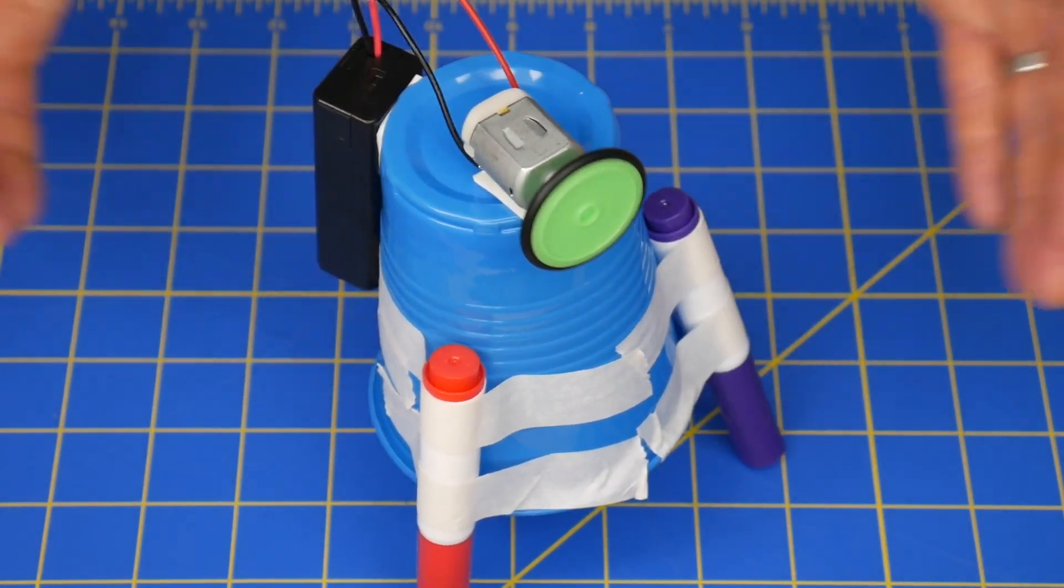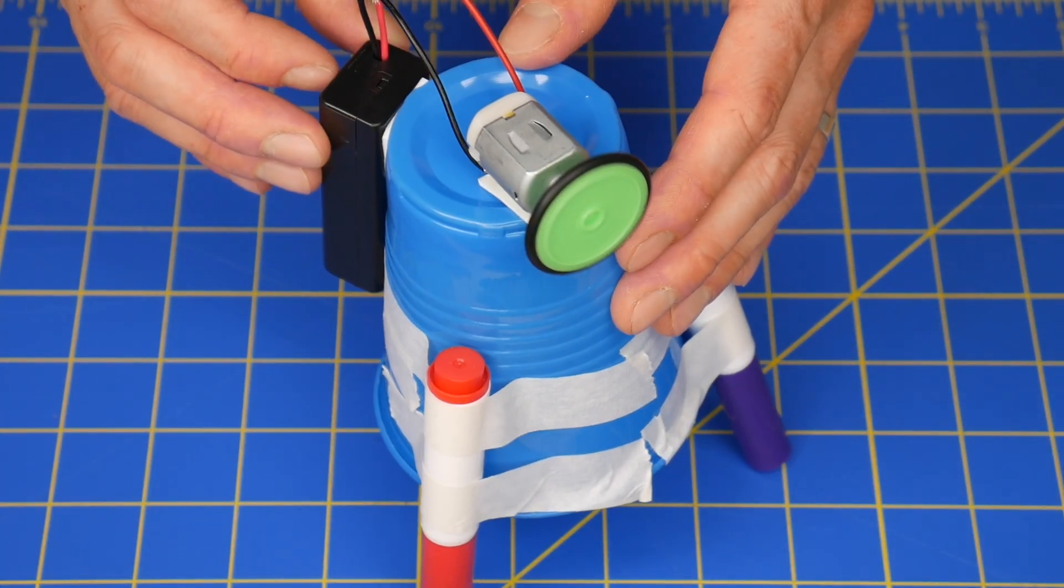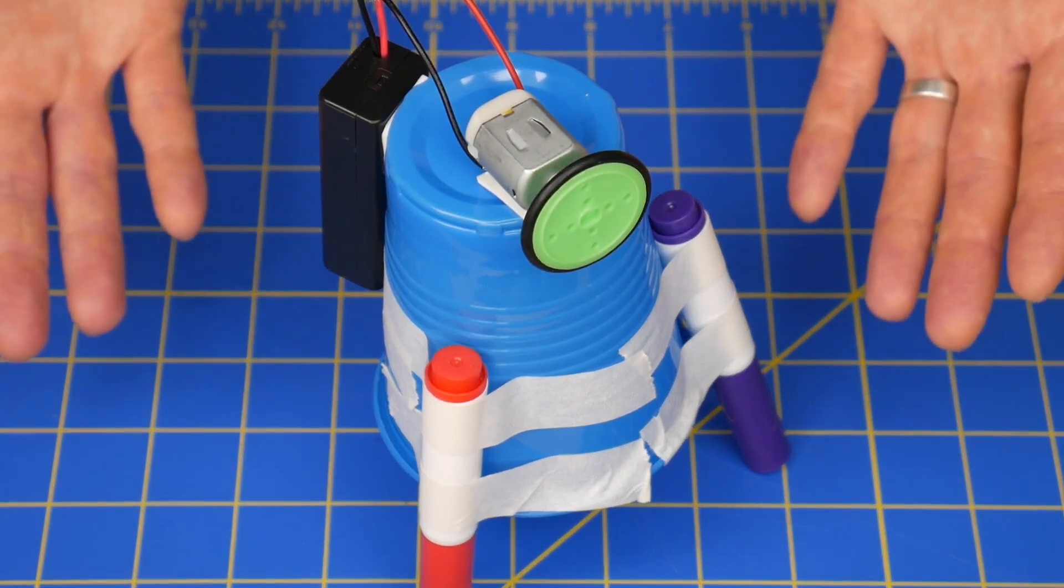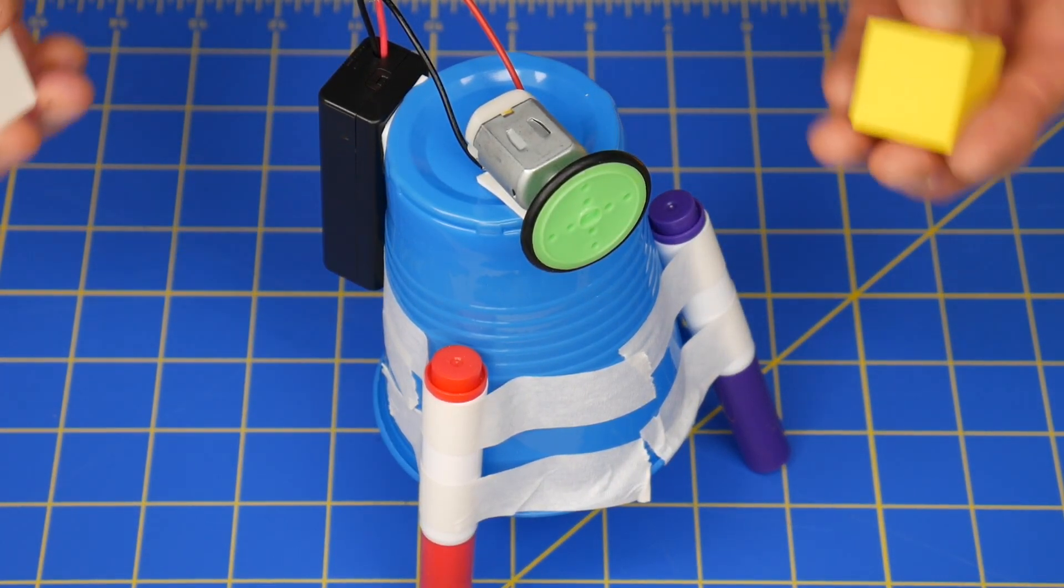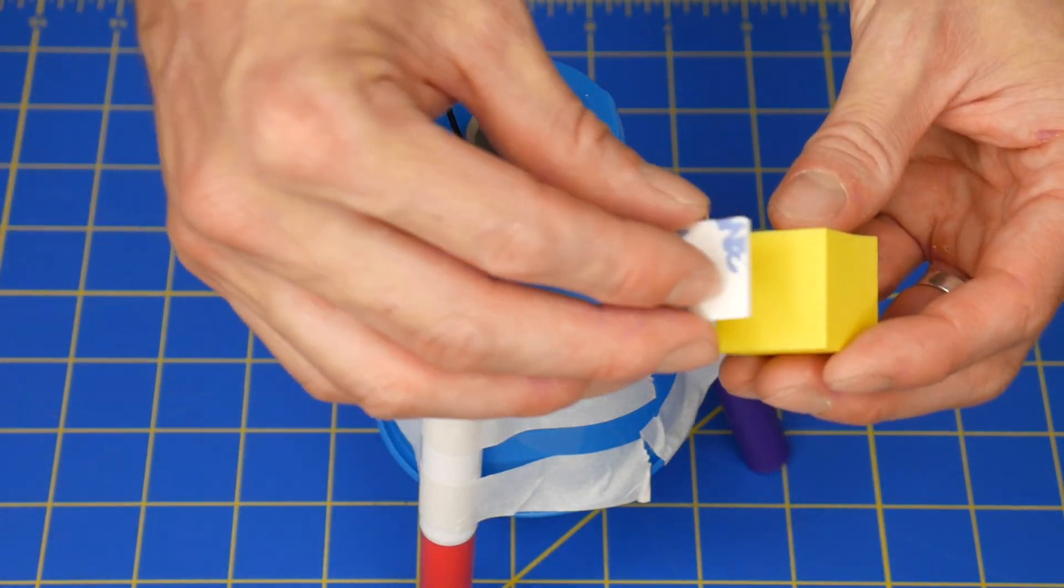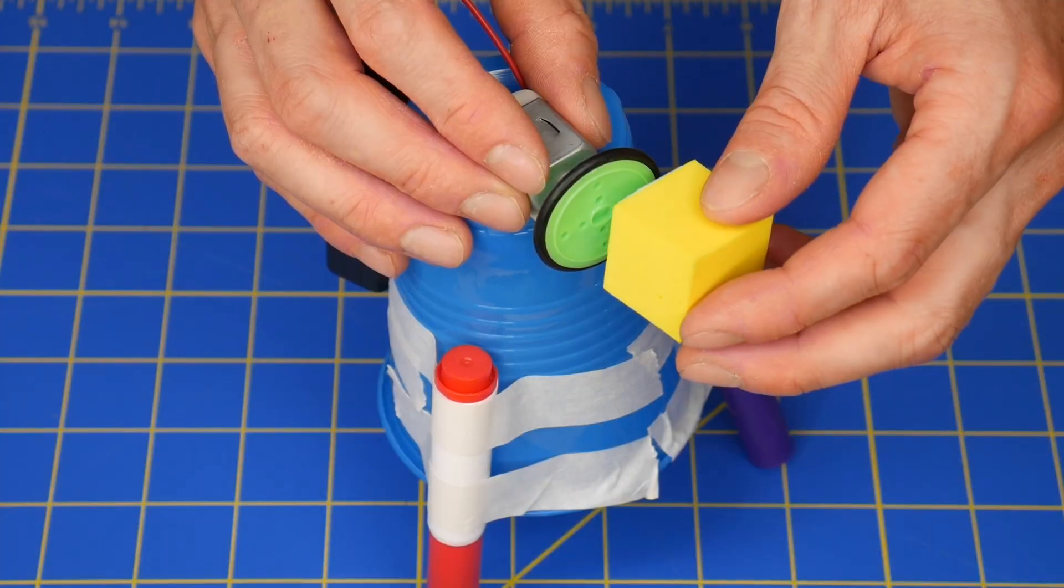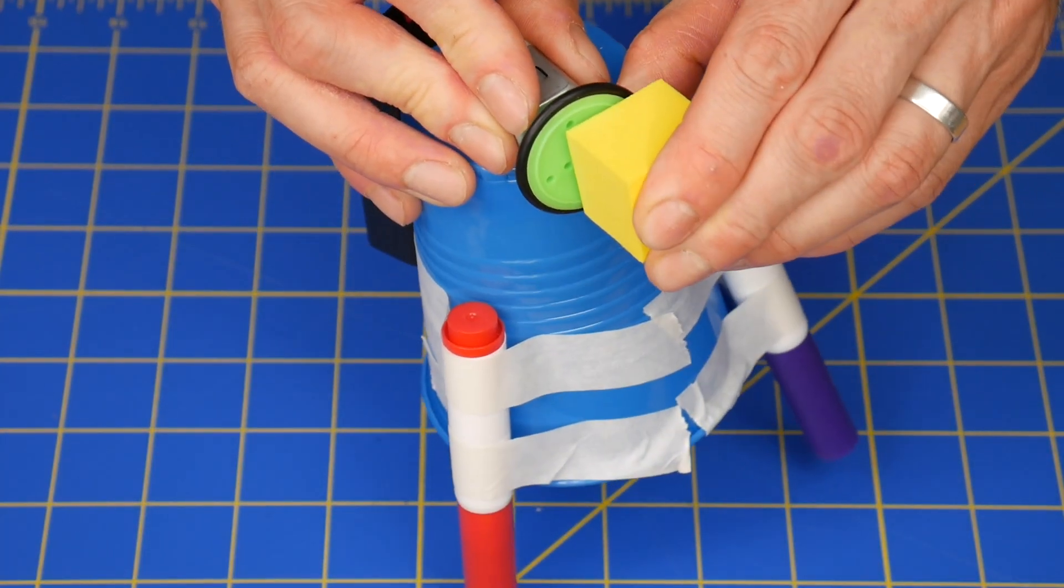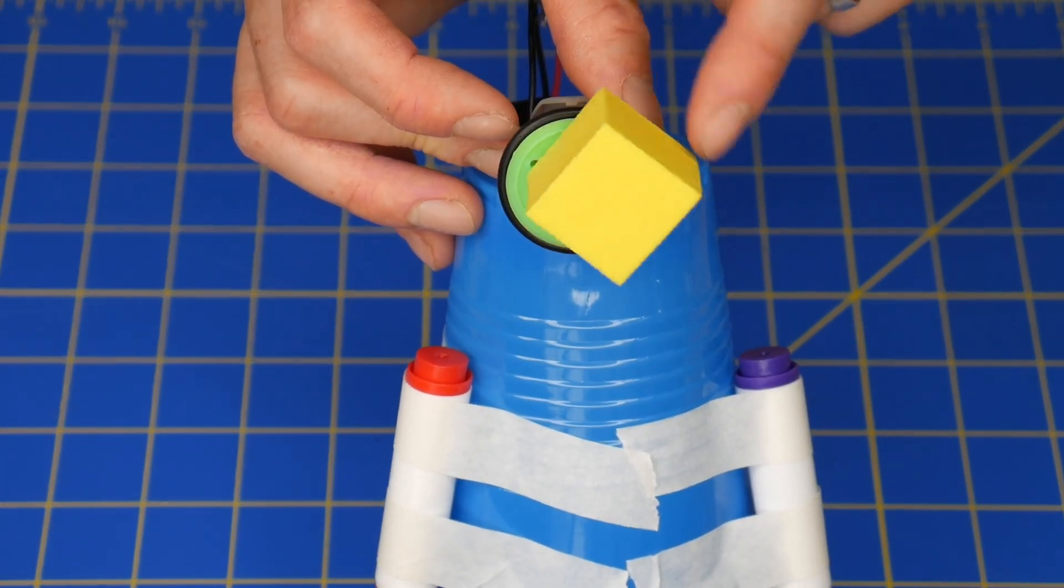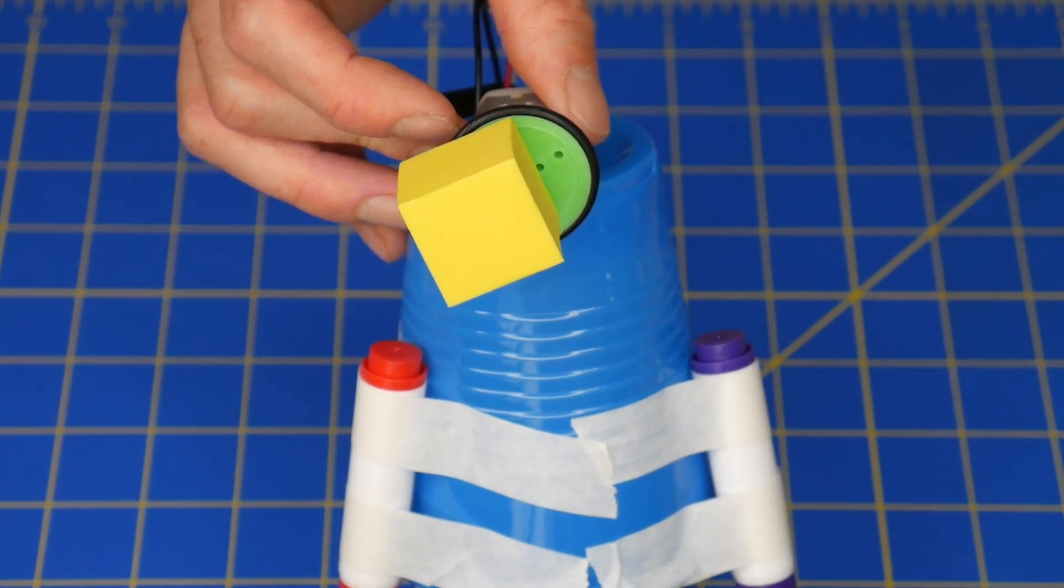Now if we turn this on, it spins but it doesn't vibrate. To create an asymmetrical weight I like to use these one inch foam cubes with another adhesive square stuck onto the motor. Just make sure that it's at least a little bit off center, that's what's going to cause it to vibrate.